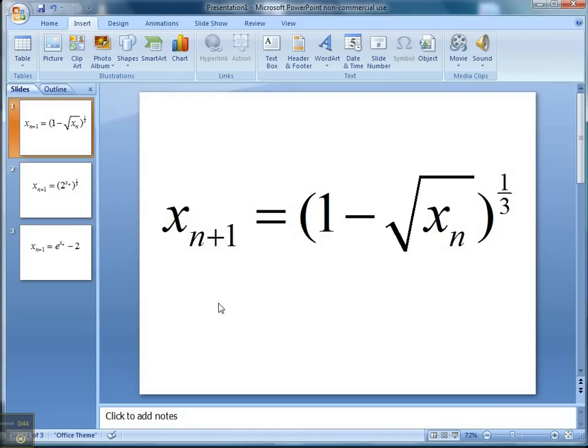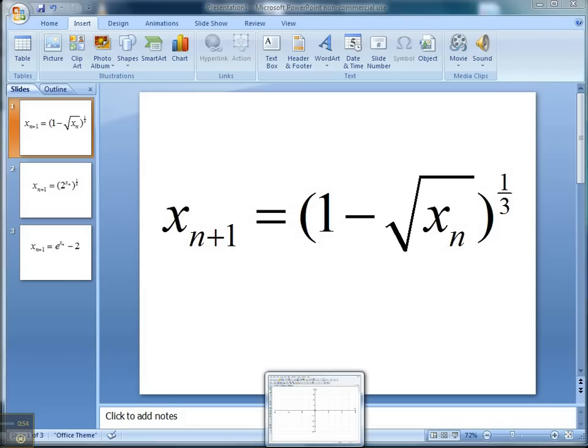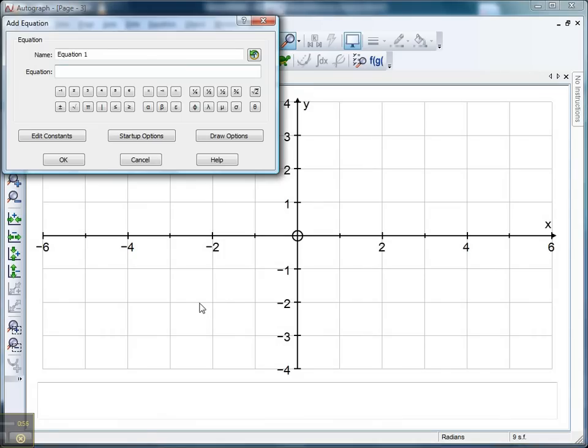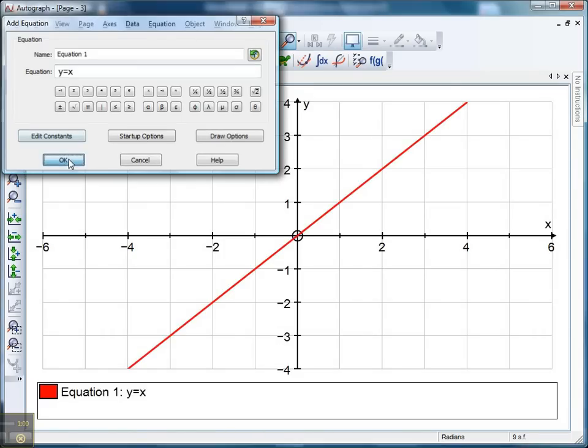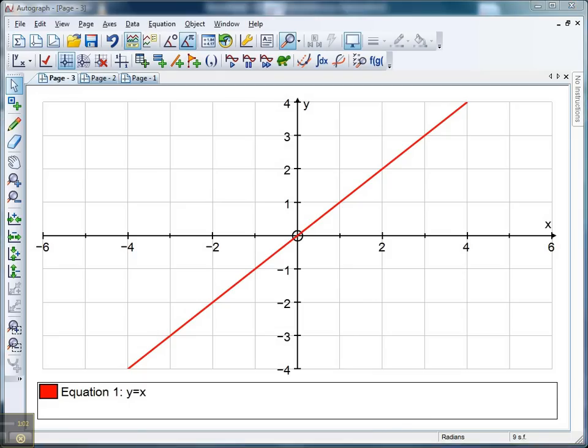Now if you were doing this the kind of traditional method, we'd need to draw y equals x and we'd need to draw this nasty looking equation. And that's the exact same way we're going to start with Autograph. So here we go, let's get ourselves a y equals x line first. So I've just hit enter there for enter equation, y equals x and click OK. That looks good to me. And then let's have another look at this nasty one.